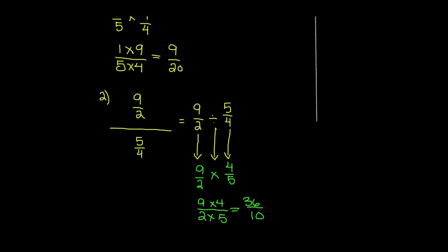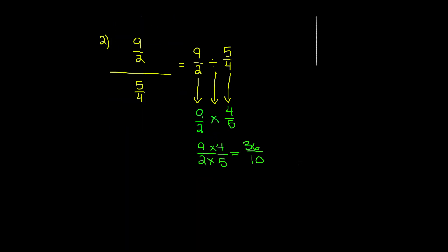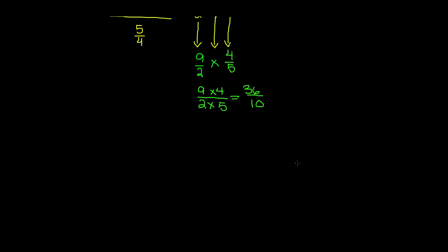So we get thirty-six over ten. If you want to make it into a mixed number you can go ahead, because as you can see this is an improper fraction. But I'm going to move on to the next problem.